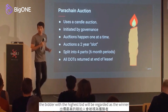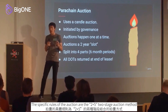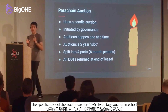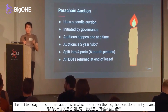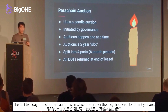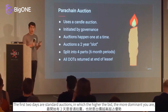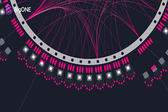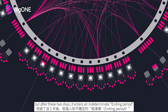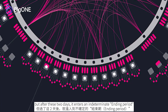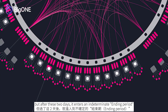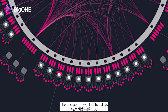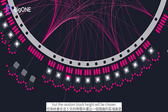The specific rules of the auction use a two-plus-five, two-stage auction method. The first two days are standard auctions in which the higher the bid the more dominant you are. But after these two days it enters an indeterminate ending period, which will last five days.